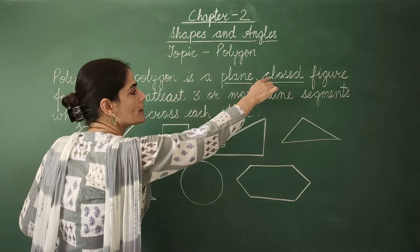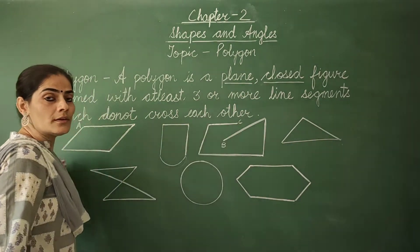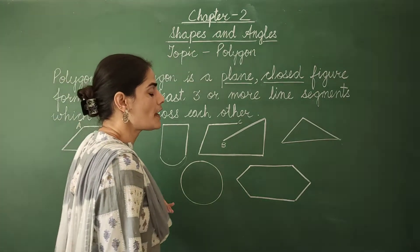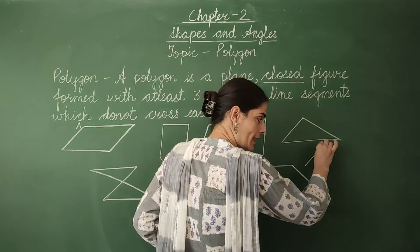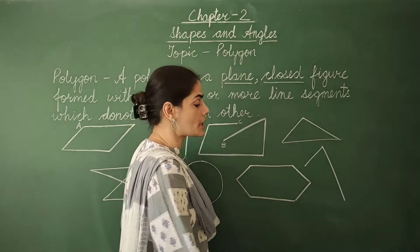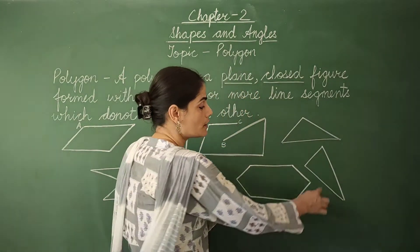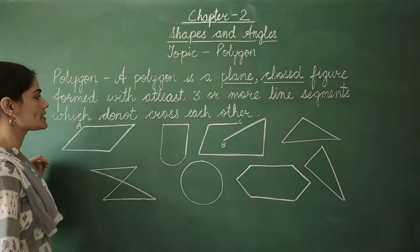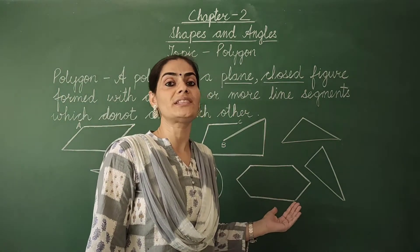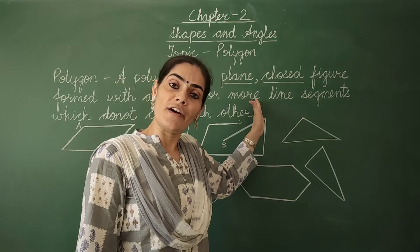So it is clear that it is a plain closed figure. The third point is that it is formed with at least three line segments. The minimum number of line segments required to draw a polygon is three. If I draw a figure with just one or two line segments, it is not a closed figure, and unless it is closed we cannot consider it as a polygon. The number of line segments could be more than three but cannot be less than three. Also remember that the number of line segments should be finite and countable.